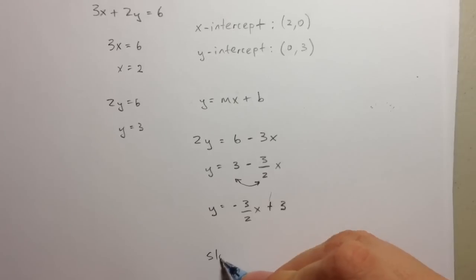So therefore, my slope, which is m, is just negative 3 halves. Pretty easy, huh? So let's check it out.